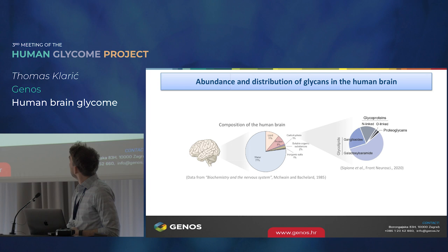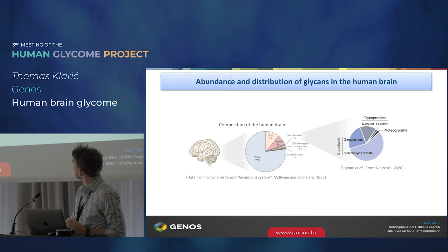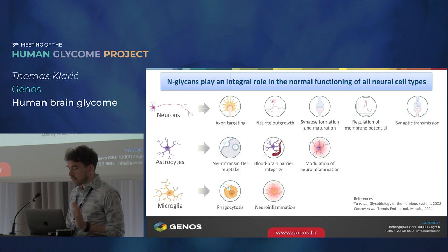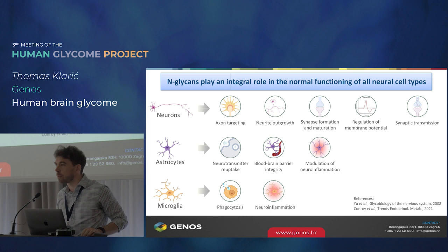Let's firstly look at carbohydrates in the brain. They make up only around 1% of the total brain mass, and most of those are attached to lipids in the form of glycolipids. N-glycans, which is the subtype of glycosylation I'll speak about today, make up only a fraction of 1% of total brain matter. But that doesn't mean that they're not important.